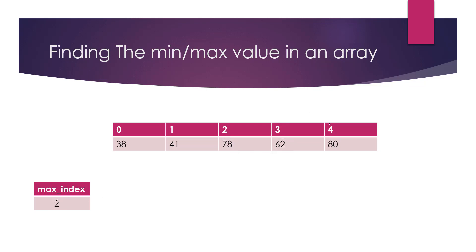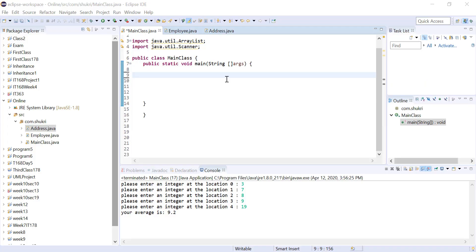We go to the last element at location 4. We compare it with the element at the current maximum index, which is location 2. So we compare 80 and 78. Since 80 is greater than 78, the maximum index is now at location 4. There are no more elements, so the index of the maximum value is location 4. We can confirm that 80 is the greatest value in this array.